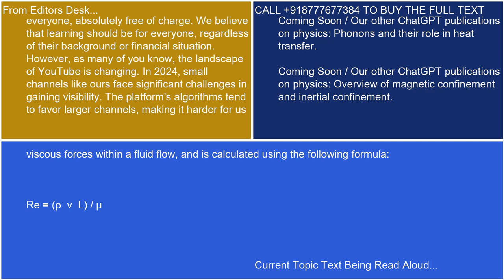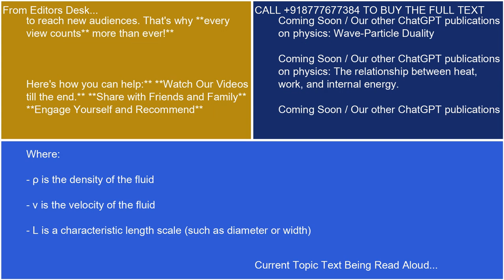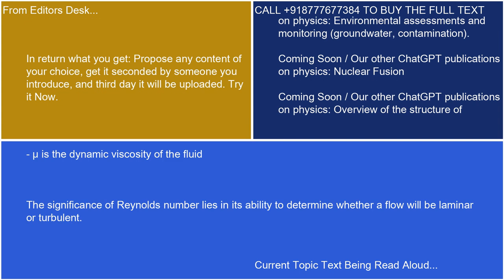Re equals rho VL slash mu, where rho is the density of the fluid, V is the velocity of the fluid, L is a characteristic length scale such as diameter or width, and mu is the dynamic viscosity of the fluid.